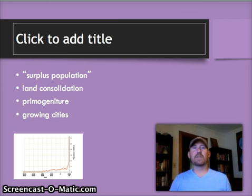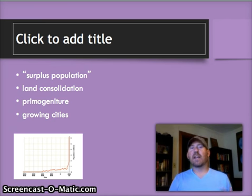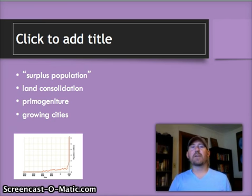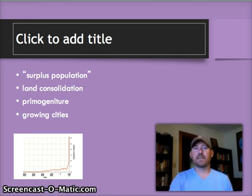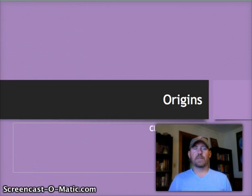Another factor is something called primogeniture, which is where the oldest son inherits the land, leaving second and third sons with little to no economic or social opportunity. And lastly are the growing cities that are coming about because of all these factors. Now let's figure out how they got this whole movement started to begin colonizing North America.